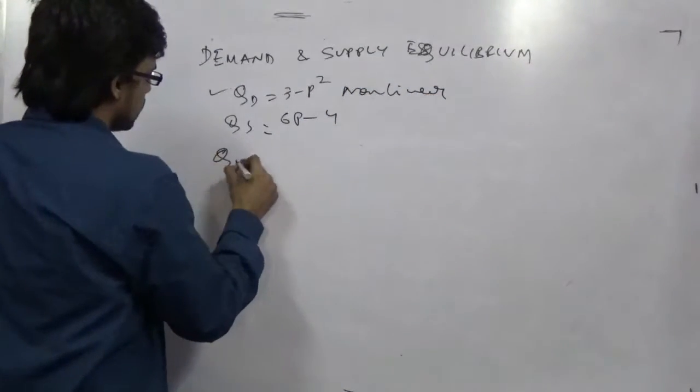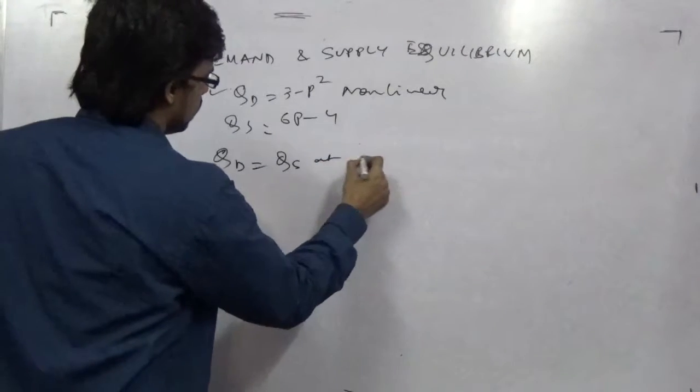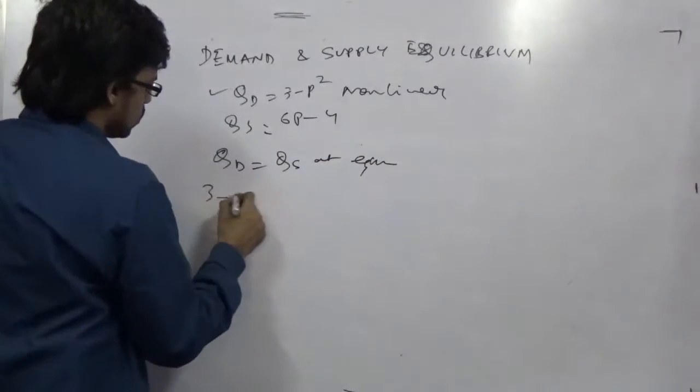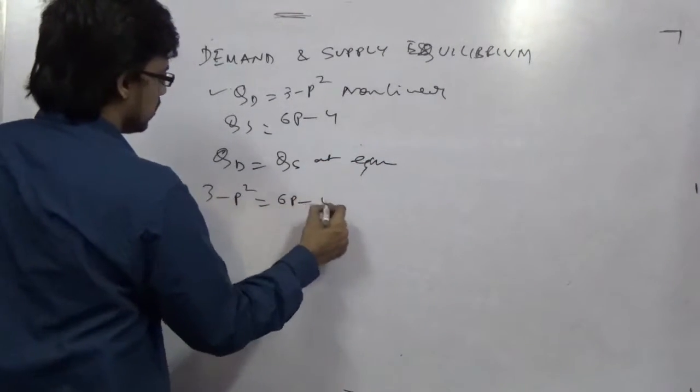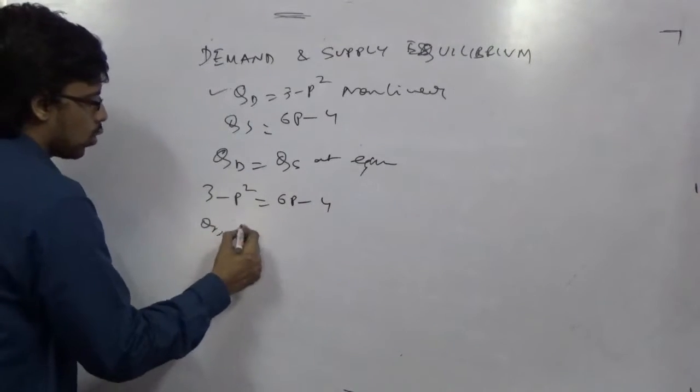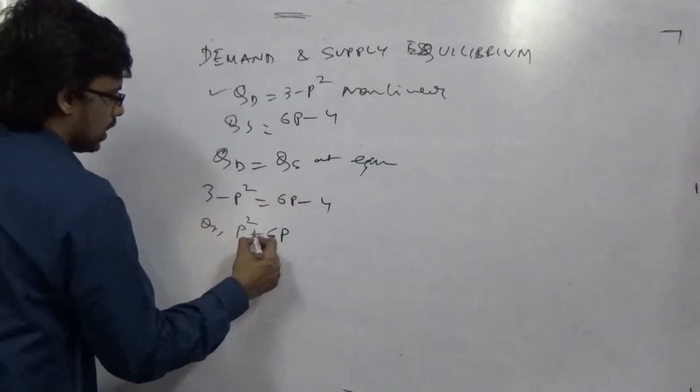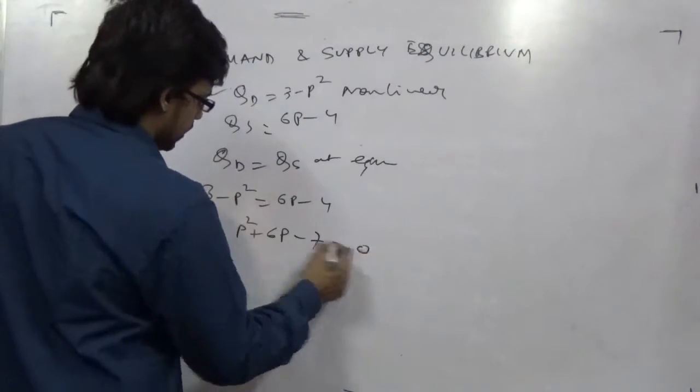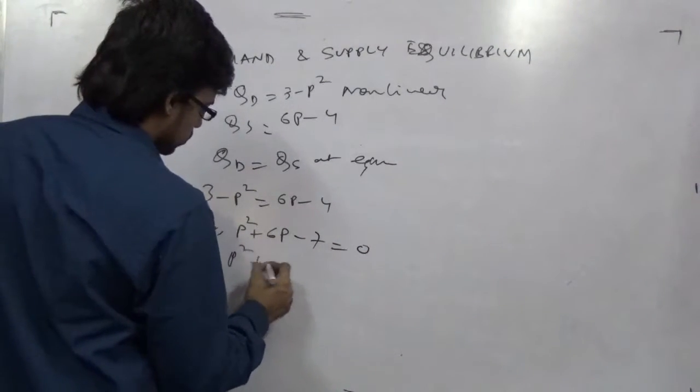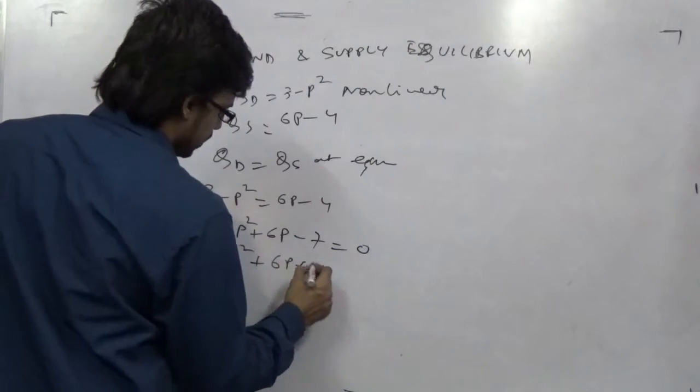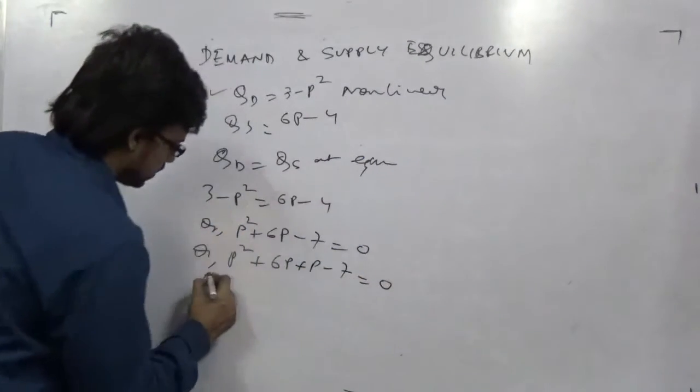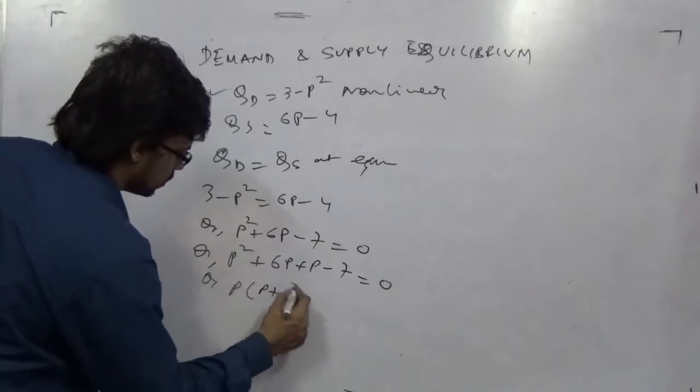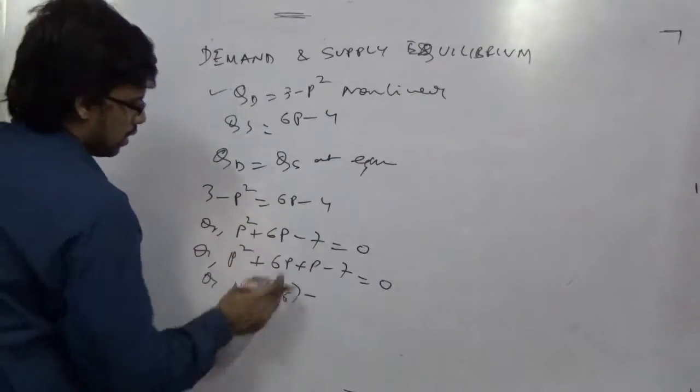Solving is again qd equals qs at equilibrium. 3 minus p square equals 6p minus 4. This will give you a quadratic equation: p square plus 6p minus 4 minus 3, which is minus 7. So p square plus 6p minus 7, or p taking down.